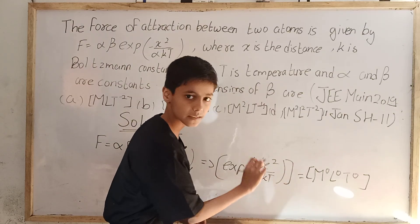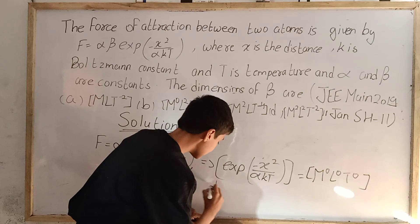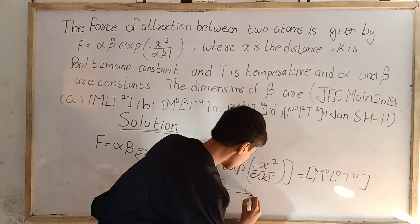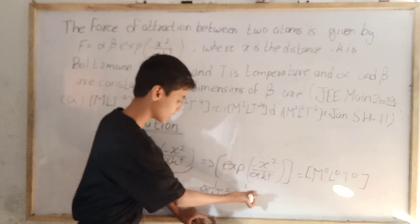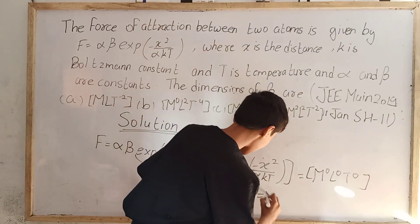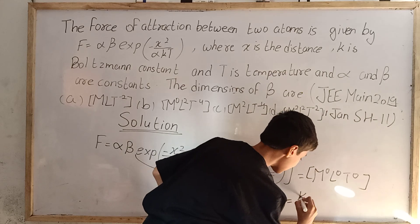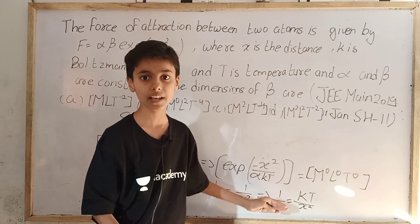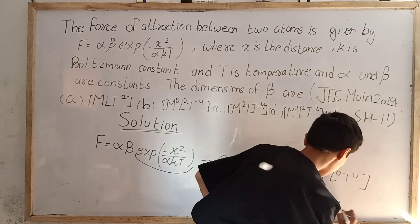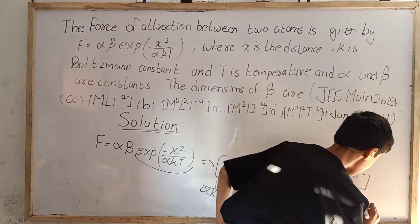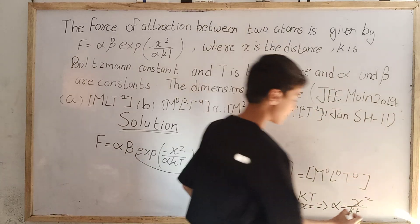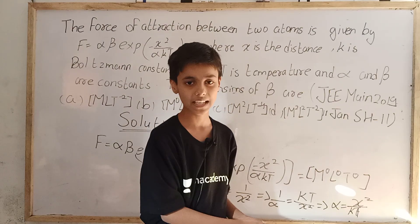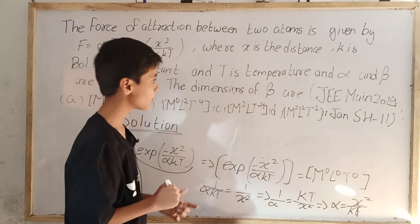Since the exponent −X² / (alpha·K·T) must be dimensionless, we get 1/(alpha·K·T) = 1/X², which implies alpha = X²/(K·T). Now we know K is Boltzmann constant and its dimensions alone are not needed directly.